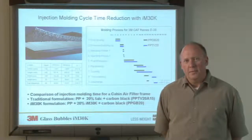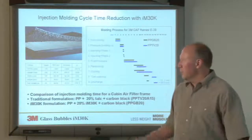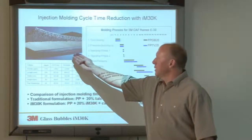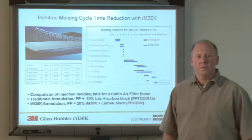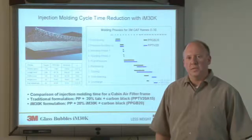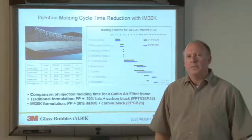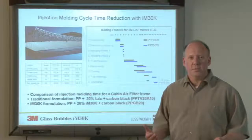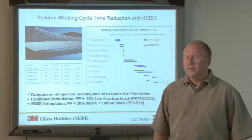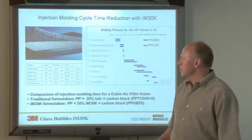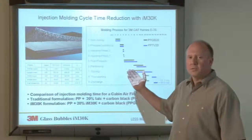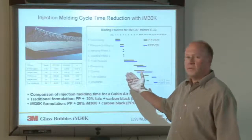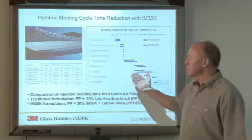This is an example in injection molding where we're making a cabin air filter frame, which is a carbon black filled polypropylene material that contains 20% talc. We took the 20% talc out and replaced it with the same volume percent of glass bubbles, and we looked at optimized cycle times in the injection molding process and saw a significant benefit of adding the glass bubbles.